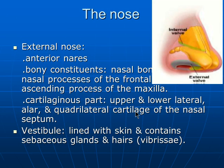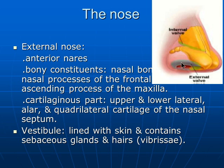The nose is composed of two parts: the external nose and the internal nose, or the nasal cavity. The external nose is composed of the anterior naris, which is lined by skin containing hair. The hair is called the vibrissae, and this area is called the vestibule of the nose.